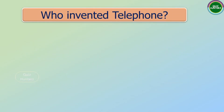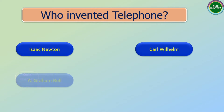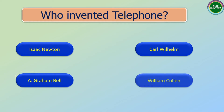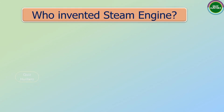Next question: Who invented the telephone? Options are: Isaac Newton, Paul Wilhelm, A. Graham Bell, William Cullen. And the correct answer is A. Graham Bell.